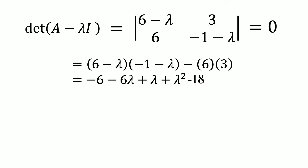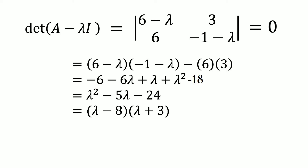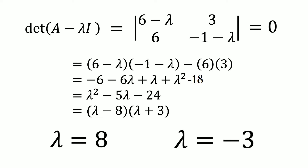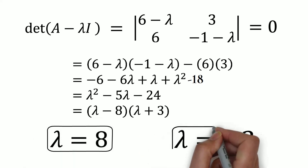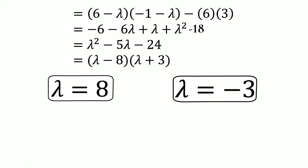Minus lambda times minus lambda is lambda squared. 6 times 3 is 18. We can again simplify this to lambda squared minus 5 lambda minus 24, and this has to equal 0. This means that lambda minus 8 equals 0 or lambda plus 3 equals 0. Therefore, lambda equals 8 or lambda equals minus 3. These are our eigenvalues.